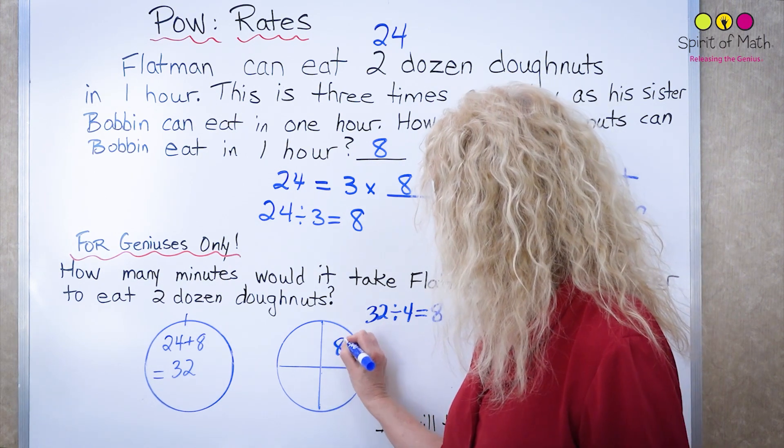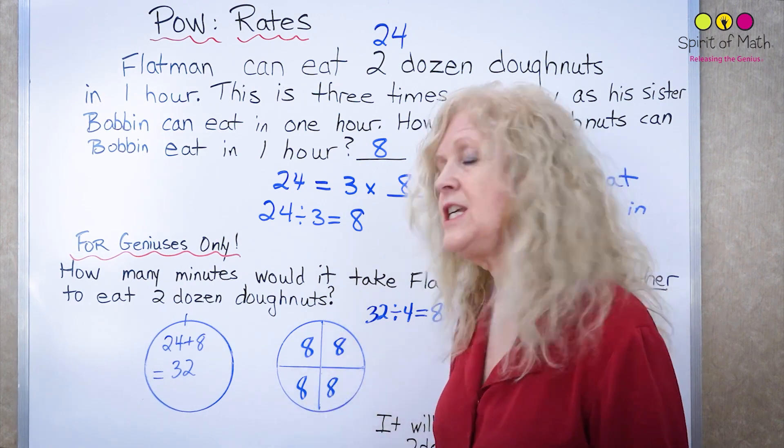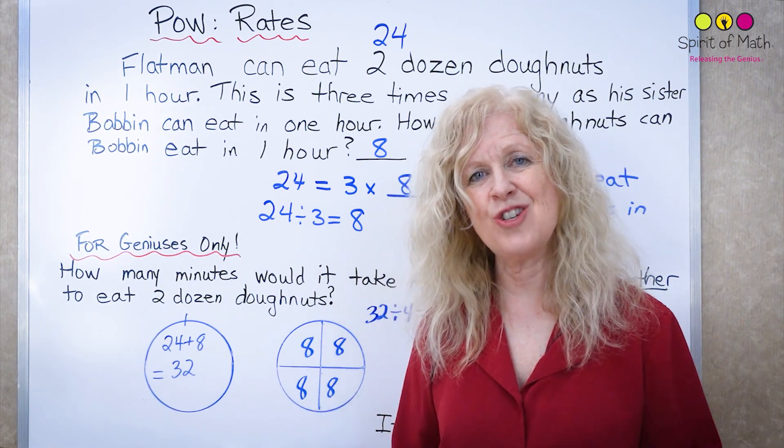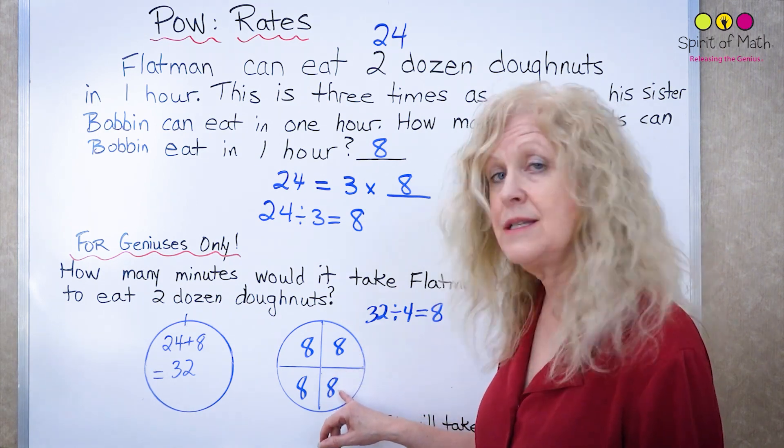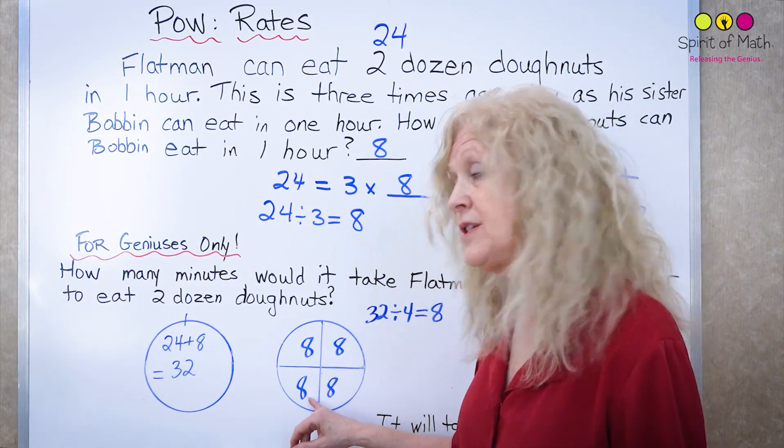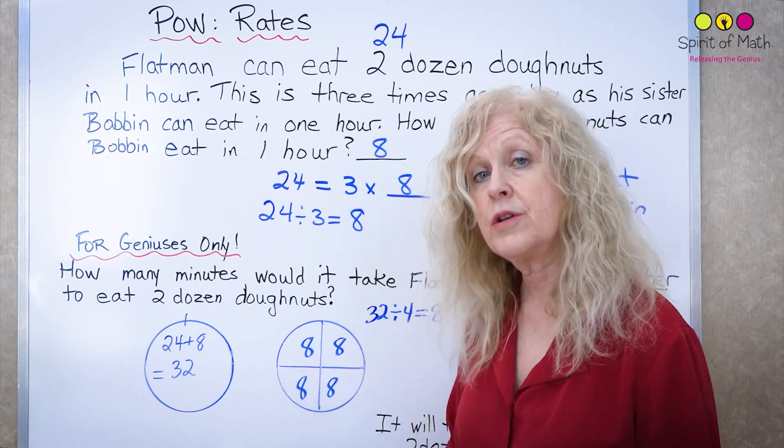So in each quarter you have eight, eight, eight, eight. Every 15 minutes that means they can eat eight doughnuts together. So let's just double check. Eight plus eight is 16 plus eight is 24 plus eight is 32 or eight times four is 32.